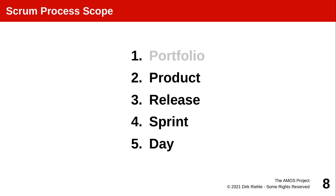When we talk about software development, we need to look at scope and complexity. At the largest level, a company has business units with product portfolios; within those portfolios are individual products. Products evolve over releases, releases are built from sprints, and sprints are based on daily work. Scrum tells us how to handle everything from day-to-day activities up to single products, but nothing beyond one product or project.